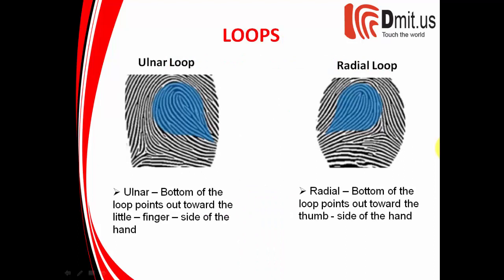When we look at loops, there can be two different types: a radial loop or an ulnar loop. If you take your hand and look at it right now, where your thumb attaches to your forearm, that bone is called the radius. Your pinky attaches to the ulnar side of your forearm. When we're looking at the loop, you want to look at whether the bottom of the loop points out towards the thumb side of the hand or towards the pinky side of the hand.